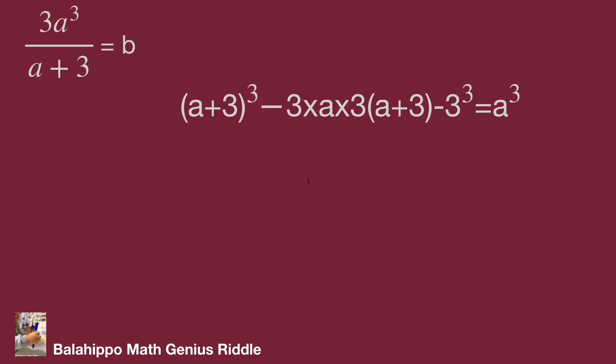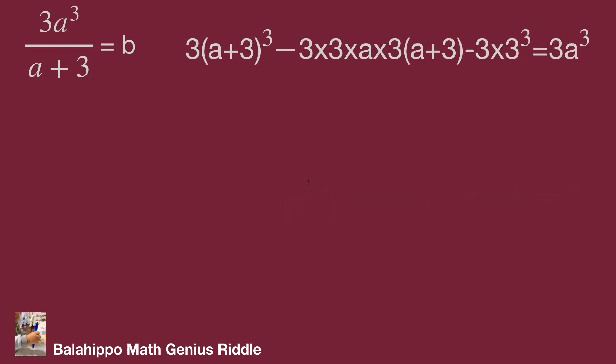Multiply 3 on both sides to get 3a³. We have a new equation as displayed.